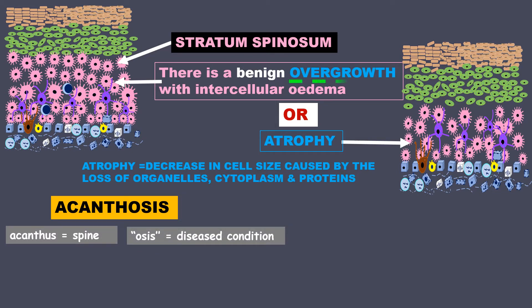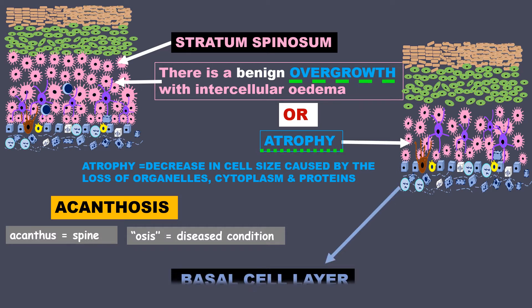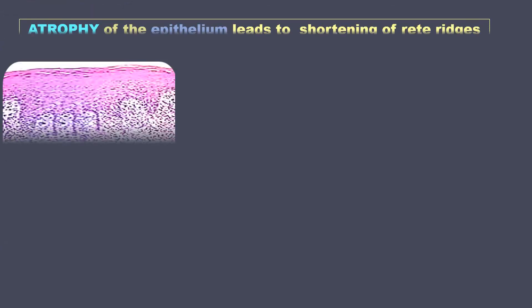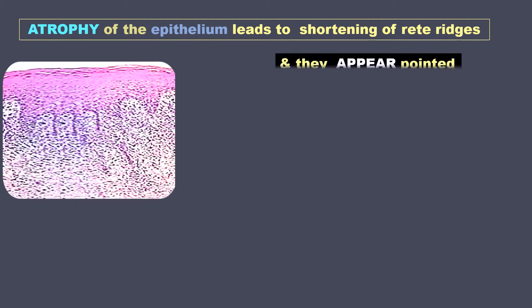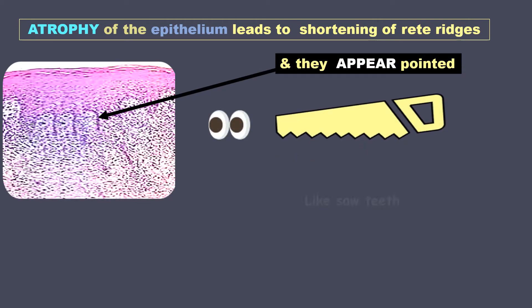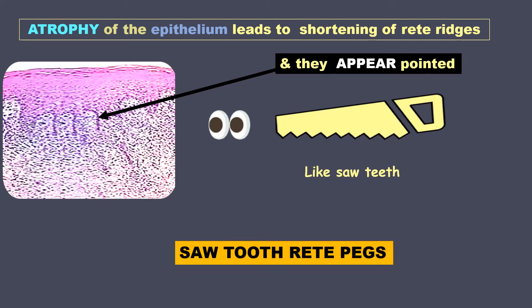The condition of the stratum spinosum could be either overgrowth or atrophy. The bottom-most layer is the basal cell layer, which also shows atrophy. Atrophy of the epithelium leads to shortening of the rete ridges, and they appear pointed like saw teeth. This appearance is called saw-tooth rete pegs.